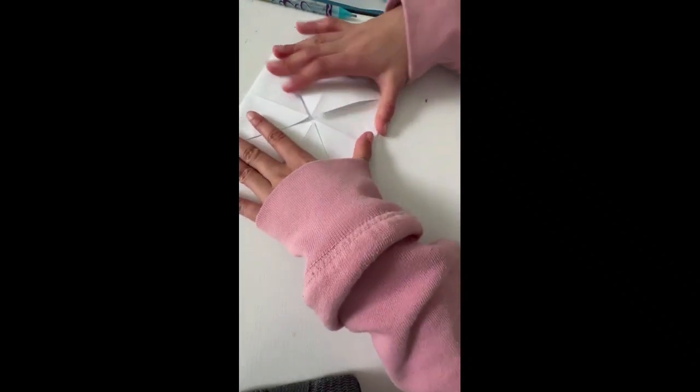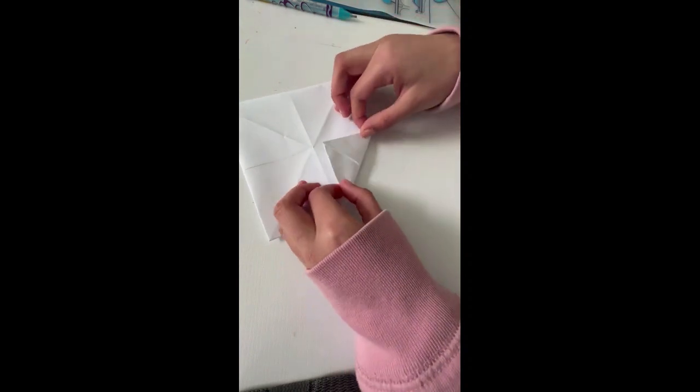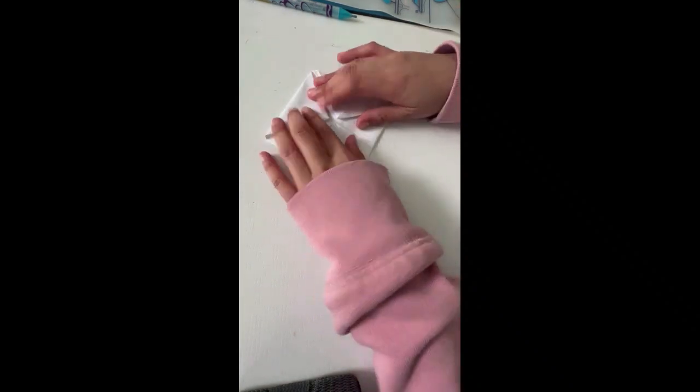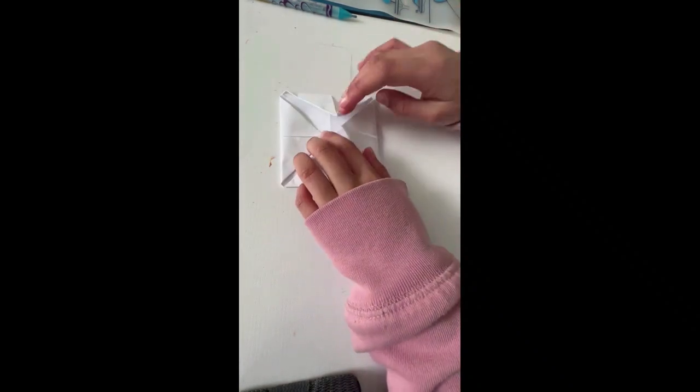So now I'm done folding one side. After this I'm gonna flip it over and do the same thing on the other side. Okay, now after you're done with these, all we have to do is open it up to make the fortune teller.